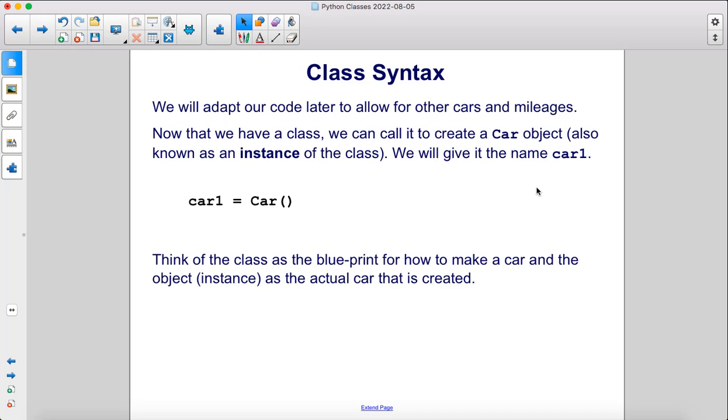We will adapt our code later to allow for other cars and mileages. Now that we have a class, we can call it to create a car object, also known as an instance of the class. We will give it the name car1.